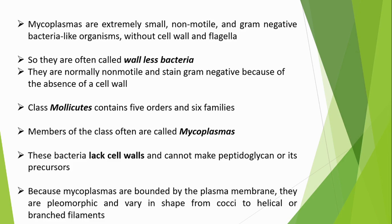This class includes five orders and six families. Members of the class are often called Mycoplasmas. All members lack cell walls and cannot make peptidoglycan or its precursors.